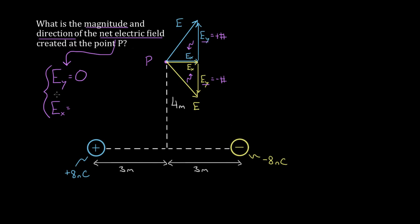We've reduced this problem to just finding the horizontal component of the net electric field. To do that, we need the horizontal components of each individual electric field. The horizontal component of the field created by the positive charge is a positive contribution since it points to the right, and I'd add that to the horizontal component of the yellow field, which also points to the right. Even though the charge creating that field is negative, the horizontal component is positive because it points to the right.